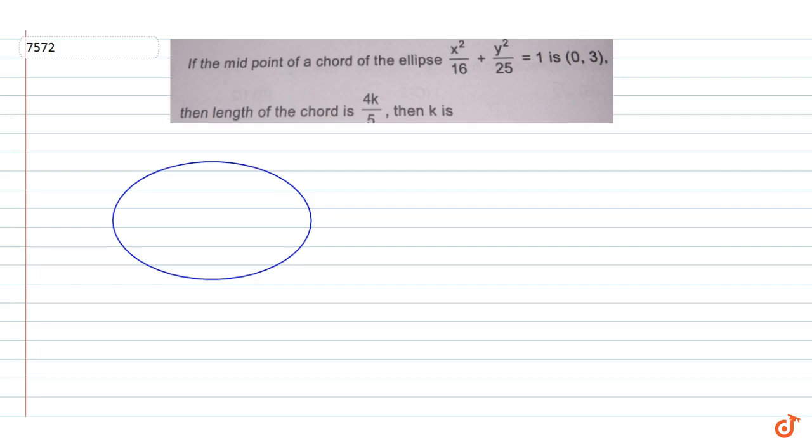The midpoint of the chord is (0, 3). That means this is the center of the ellipse (0, 0) and this is (0, 3).